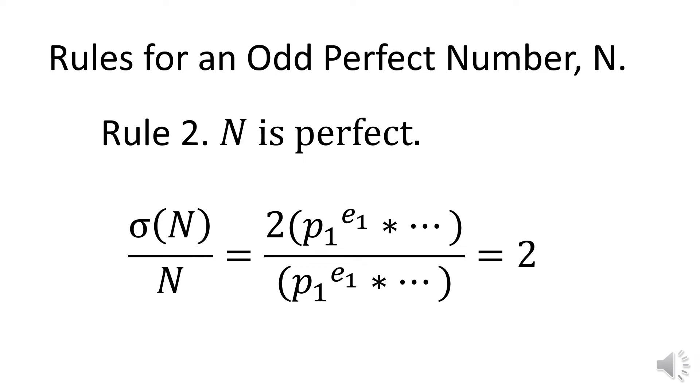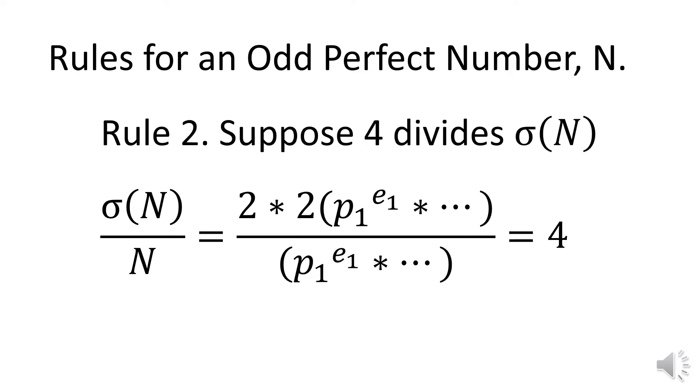Rule two is an equation. The sum of divisors of an odd perfect number, sigma of N, divided by an odd perfect number N equals two. Sigma N contains two exactly once. Why? Suppose the sum of divisors of N, sigma N, has a divisor of two times two. Then sigma of N over N equals two times two times some odd number divided by N, which is the same odd number. The odd numbers cancel, leaving a quotient of four. Sigma of N equals four times the odd prime powers in N, and N is not perfect.